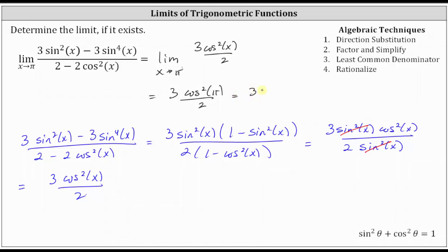So simplifying, we have three times the square of negative one divided by two, which equals three halves.